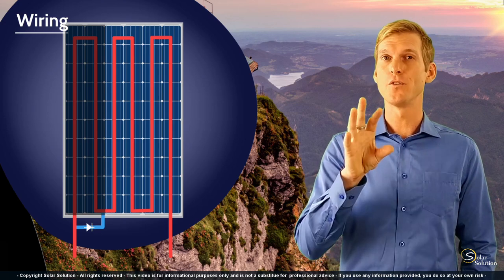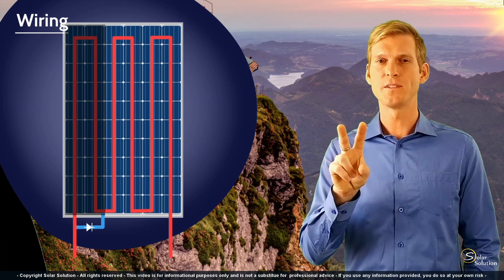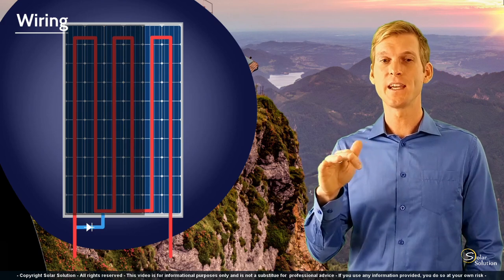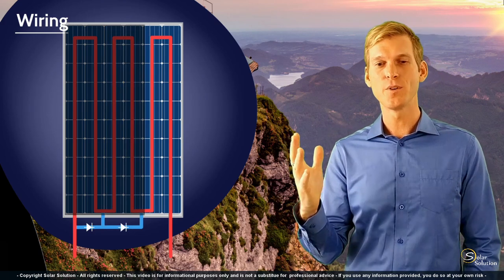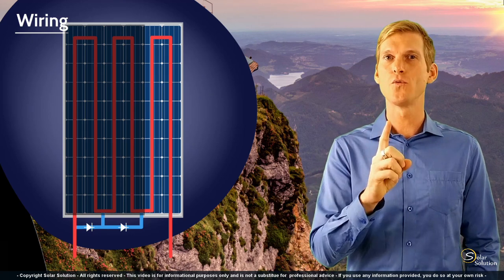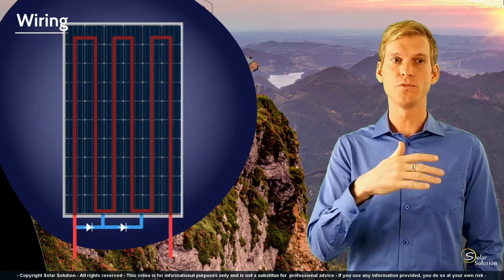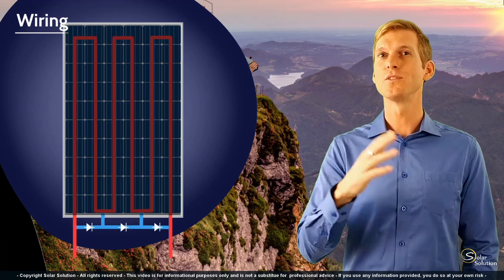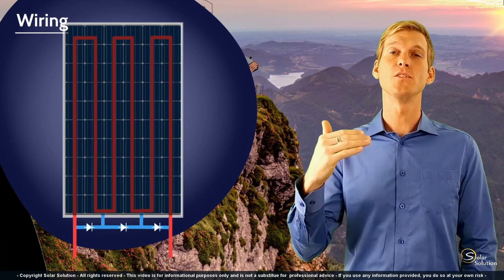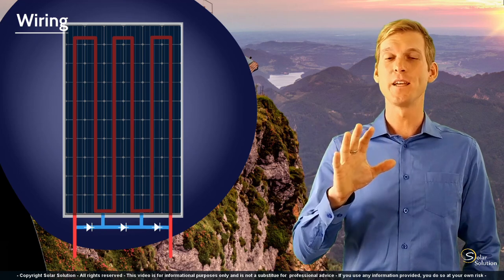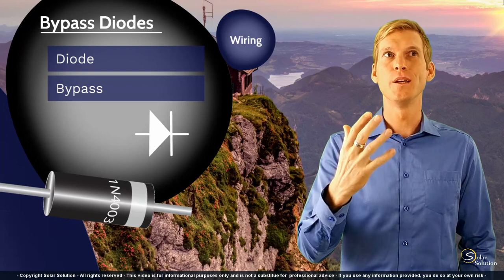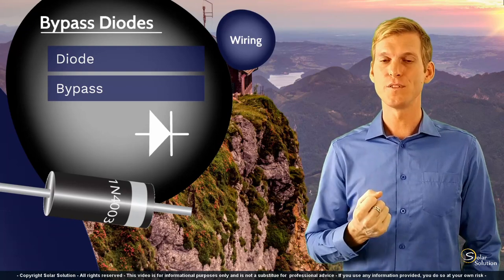Most panels have two or three bypass diodes. If a second section of the panel is shaded, another bypass diode kicks in, allowing the remaining part to keep working. The main message: without bypass diodes, one bad cell would shut down the whole panel. With bypass diodes, only the affected section is cut off and the rest of the panel still performs. This significantly increases the overall stability and performance of your solar system.